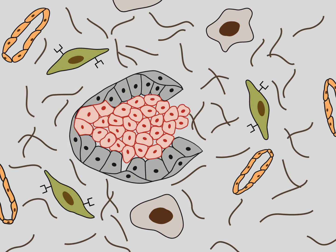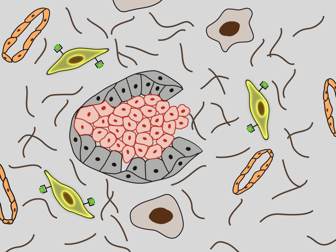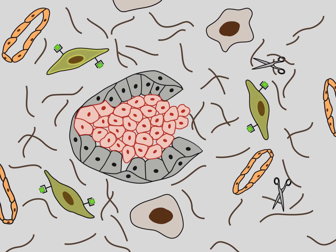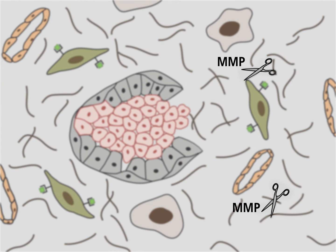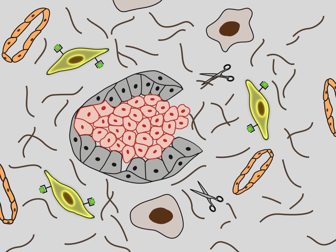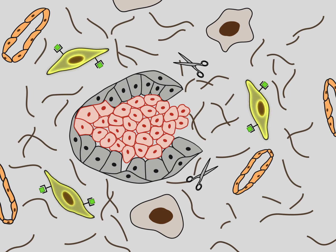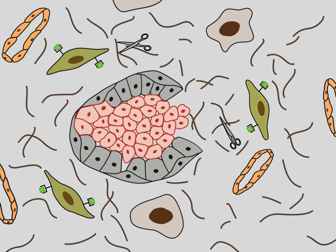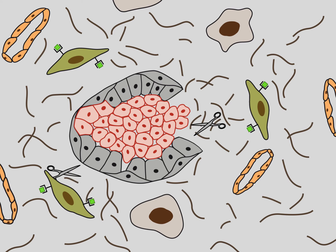Tumor stroma is a dynamic entity that is remodeled when carcinomas grow. In response to TGF-beta derived from tumor cells, activated tumor-associated fibroblasts may release metalloproteinases, which are symbolized as scissors. Metalloproteinases digest components of the connective tissue, such as collagen fibers.